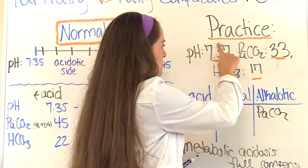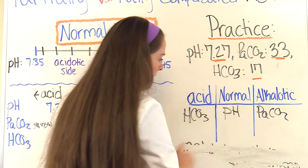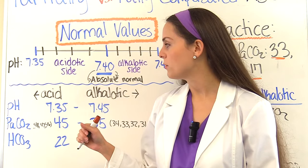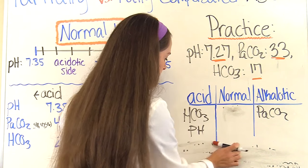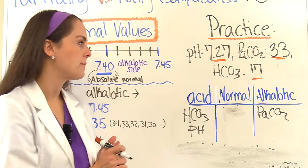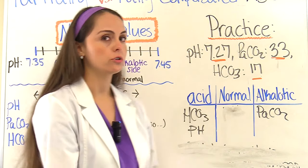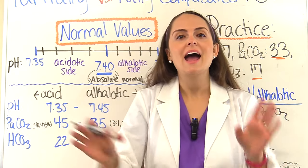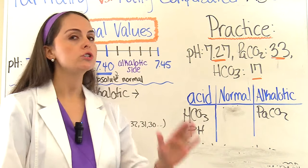Now if we change that pH to 7.27 instead of 7.37, the blood pH is now abnormal — less than 7.35, so acidotic. Move it to the acid column. Now we have a tic-tac-toe, so we have metabolic acidosis with partial compensation — PaCO2 has gone alkalotic trying to compensate, but hasn't corrected the blood pH to normal yet. So this is metabolic acidosis, partially compensated.